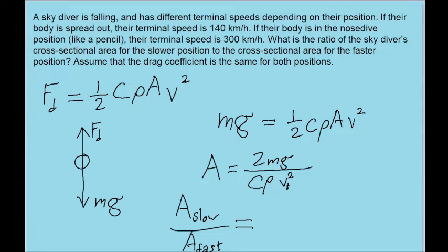So this ratio quickly becomes a very simple ratio of 1 over the slower speed squared to 1 over the faster v squared, which can be much more simply written as the square of the faster speed to the slower speed.